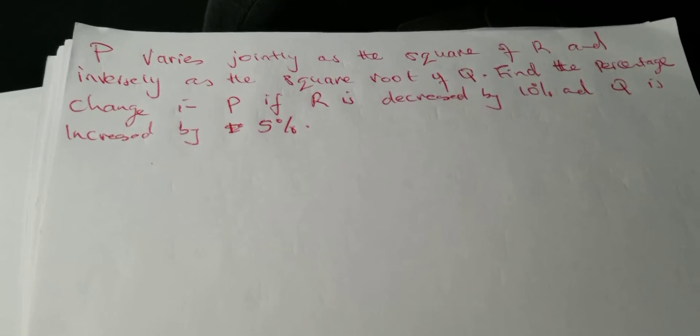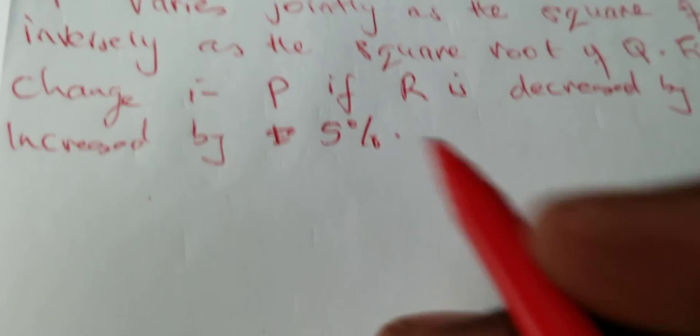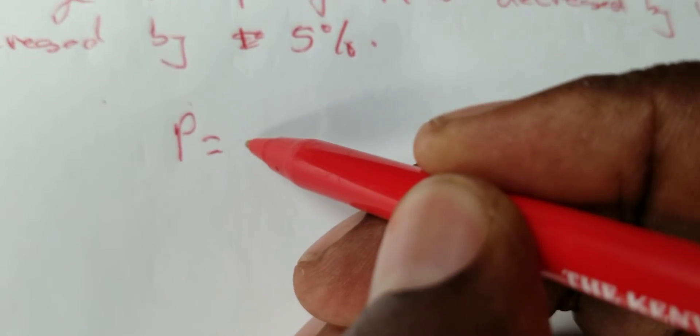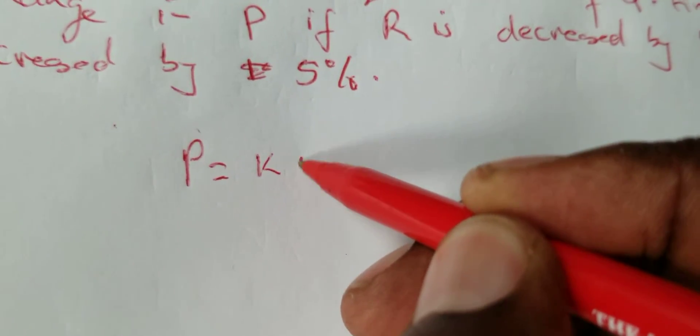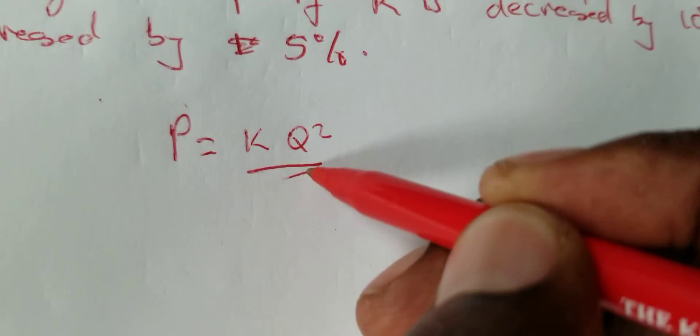So you're going to have an equation that is P is equal to K times R squared over the square root of Q.